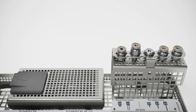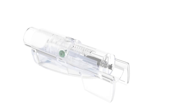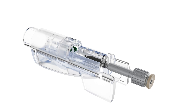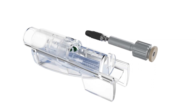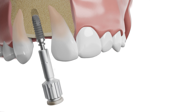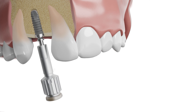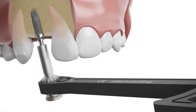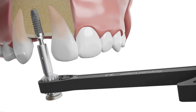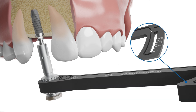For manual implant insertion, screw in the implant with the mono insertion device to the point where the implant is seated firmly in the bone. Continue working with the mono-torque ratchet. Screw in the implant with slow movements of the ratchet. Use the bending rod to display the exerted torque.